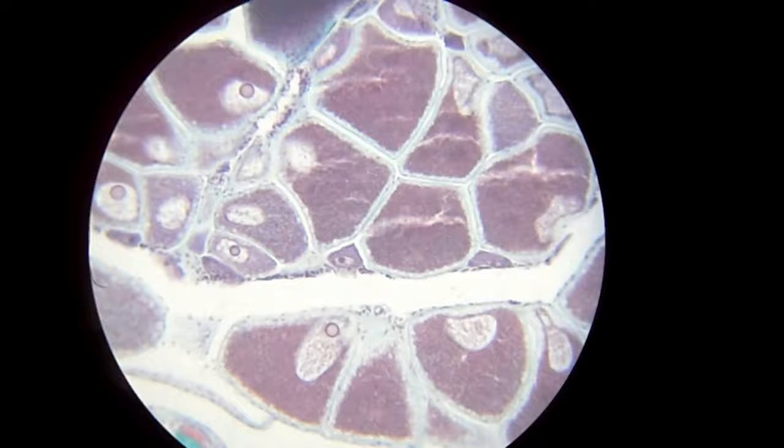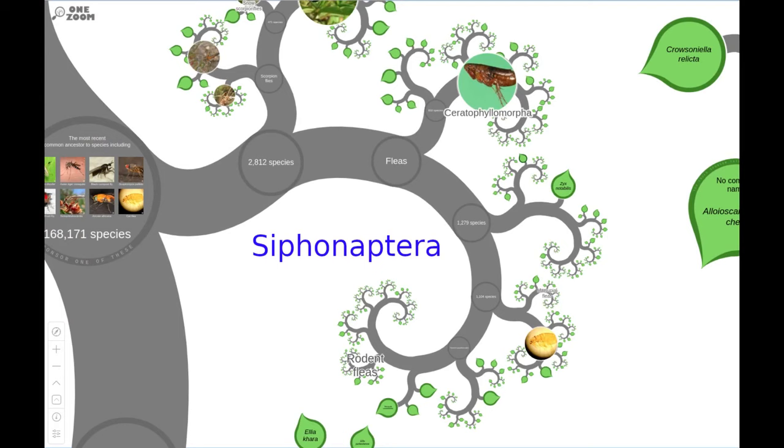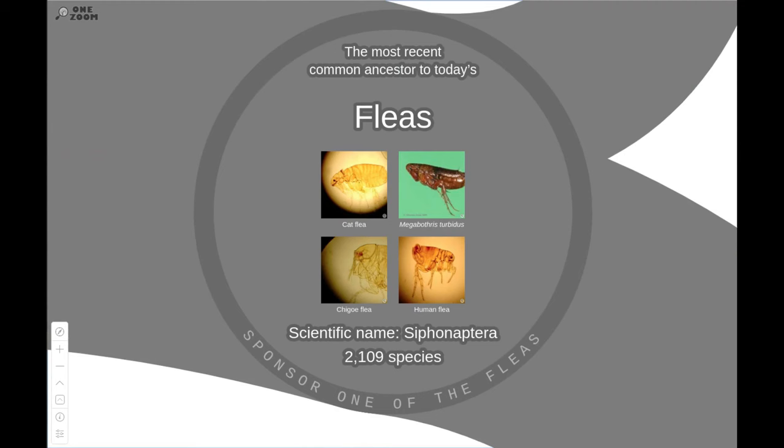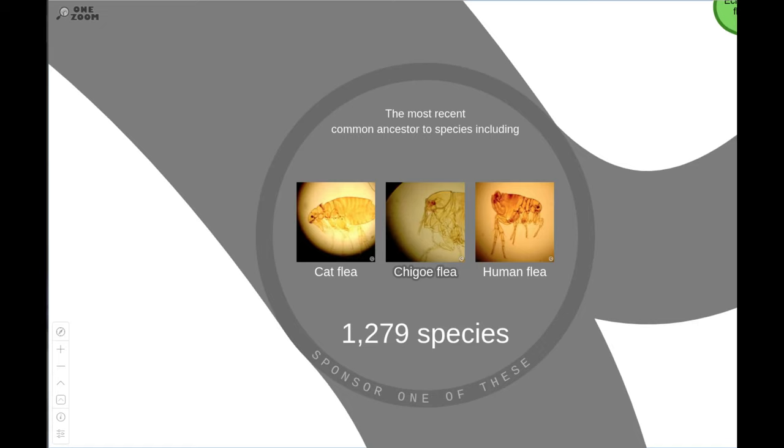Fleas belong to the order Siphonaptera and are small wingless insects. All of them are obligate blood feeders with both sexes feeding exclusively on blood. Within this order there are roughly two and a half thousand described species of flea. 95% of these flea species feed on mammals while the other 5% parasitize birds.